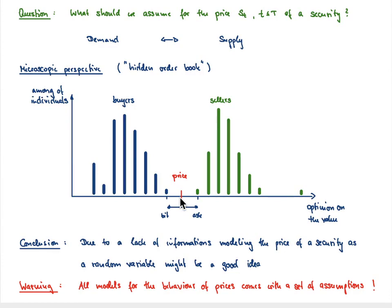What have we learned from that? All these opinions are somehow hidden and we have no access to them. Why not model the price at a particular point in time as a random variable? For every day we get another random variable, so we get a sequence of random variables. In physics, that's a decent concept — if you don't know and you believe there might be something random in the background, why not model it in a random fashion? But there is a huge difference between physics and financial mathematics at this point.